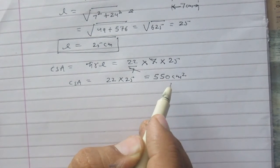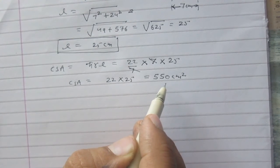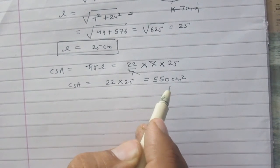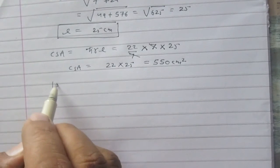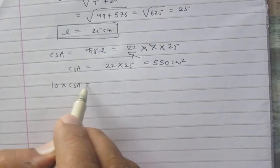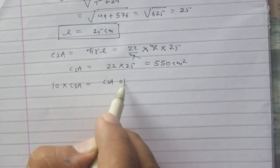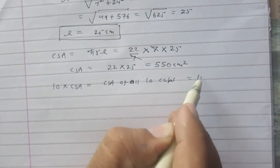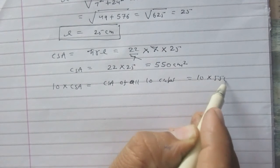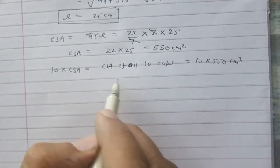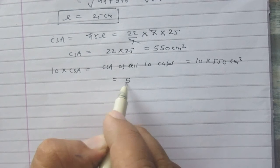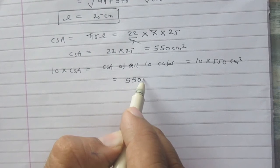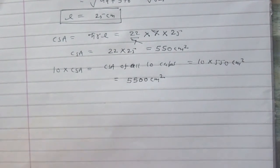It is curved surface area of a single cap. We are to find the surface area of 10 such caps. So 10 × CSA is the CSA of all 10 caps. It is 10 × 550 cm². So the final answer is 5500 cm².